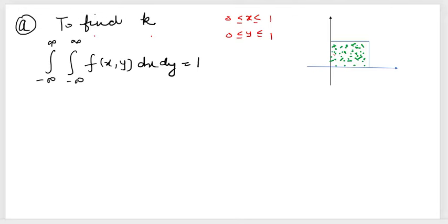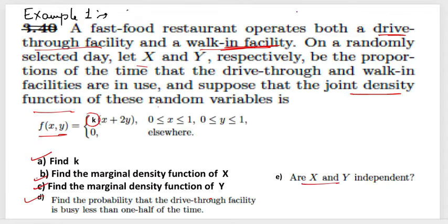The first part is to find k. Always remember — this is an important point — whenever working with a continuous random variable of two variables, first draw a rough sketch. In this case, x goes from 0 to 1 and y goes from 0 to 1, giving us a square region. To find k, we use the property that the integral of the joint probability density function over the entire region equals 1.